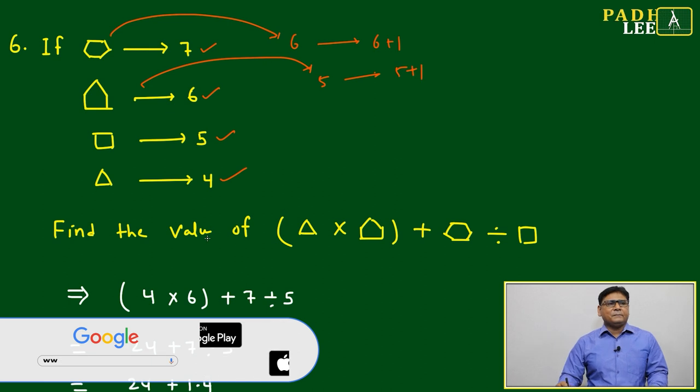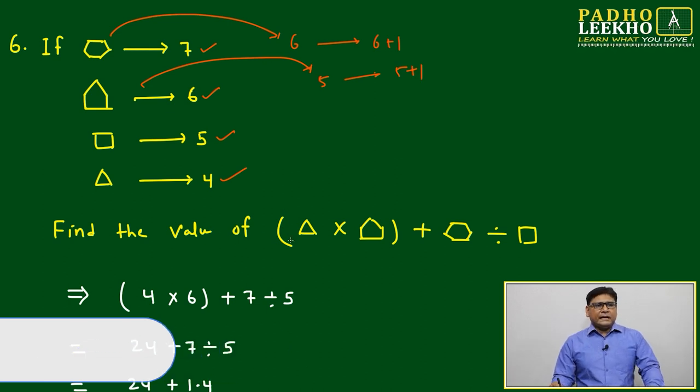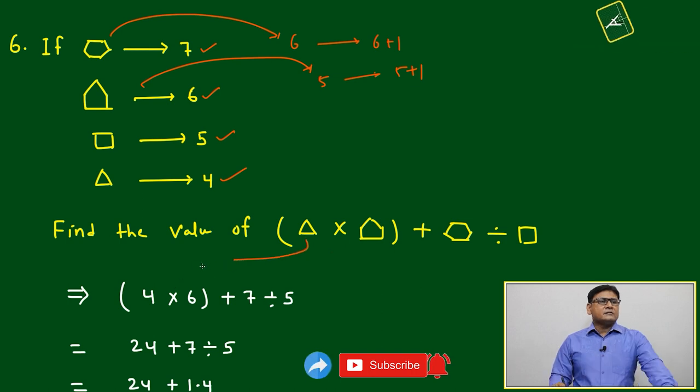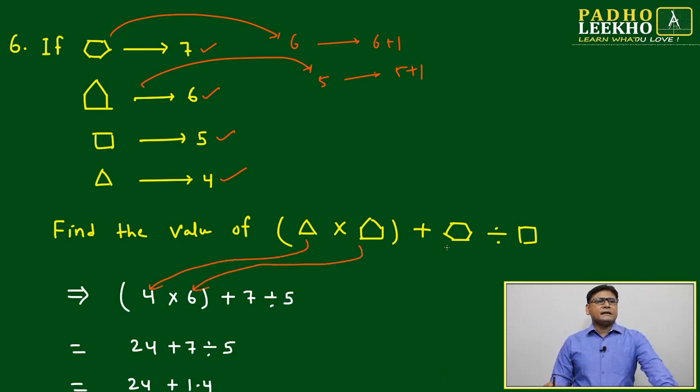Now find the value of: bracket triangle multiplied by pentagon, close bracket, plus hexagon divided by square. What you have to do is replace triangle by 4, pentagon by 6, hexagon by 7, and square by 5.